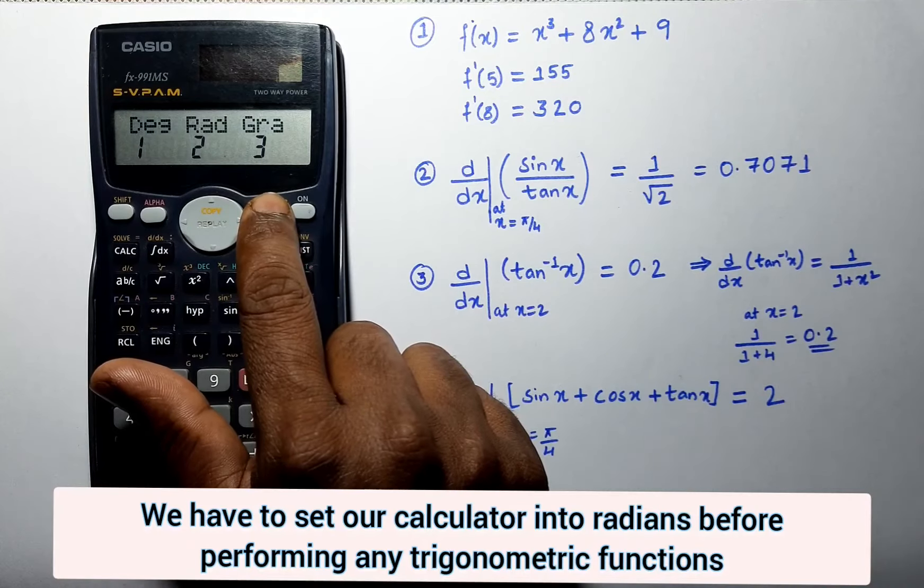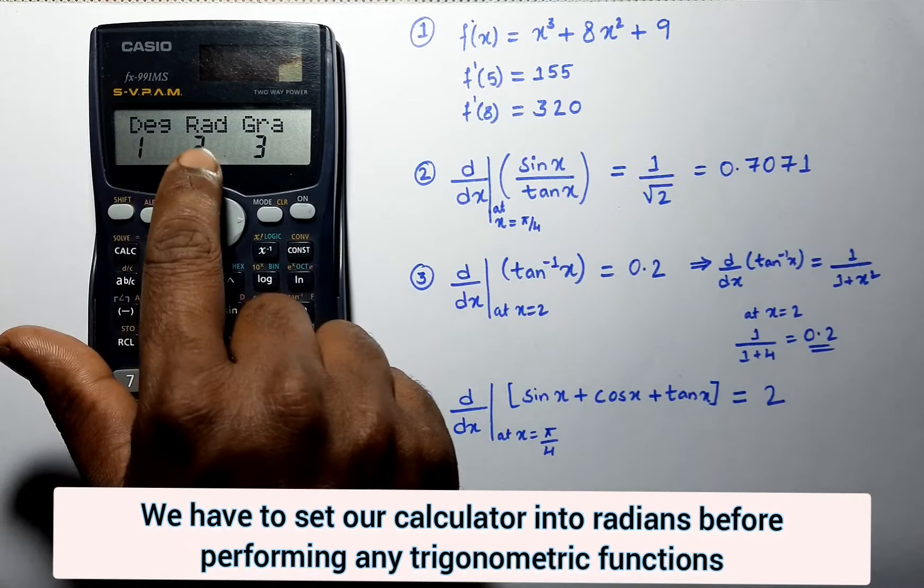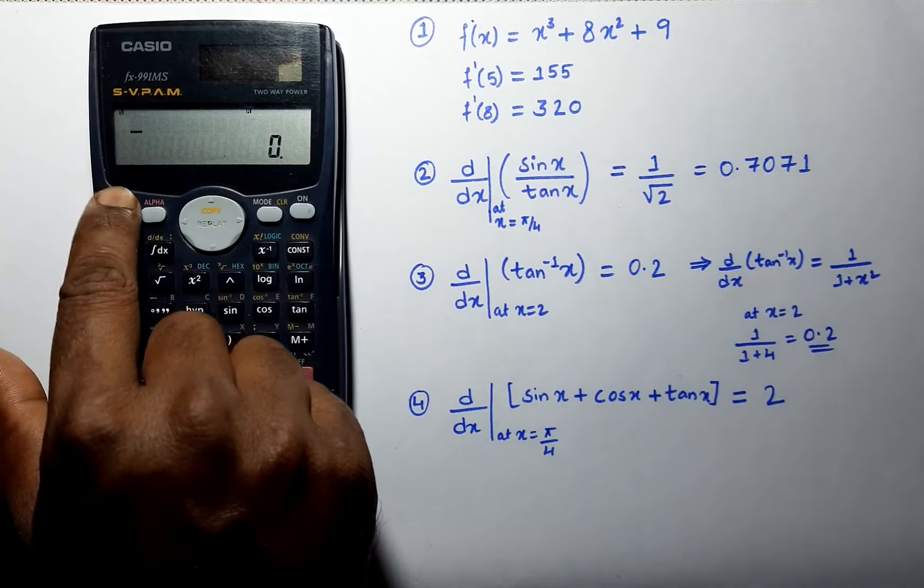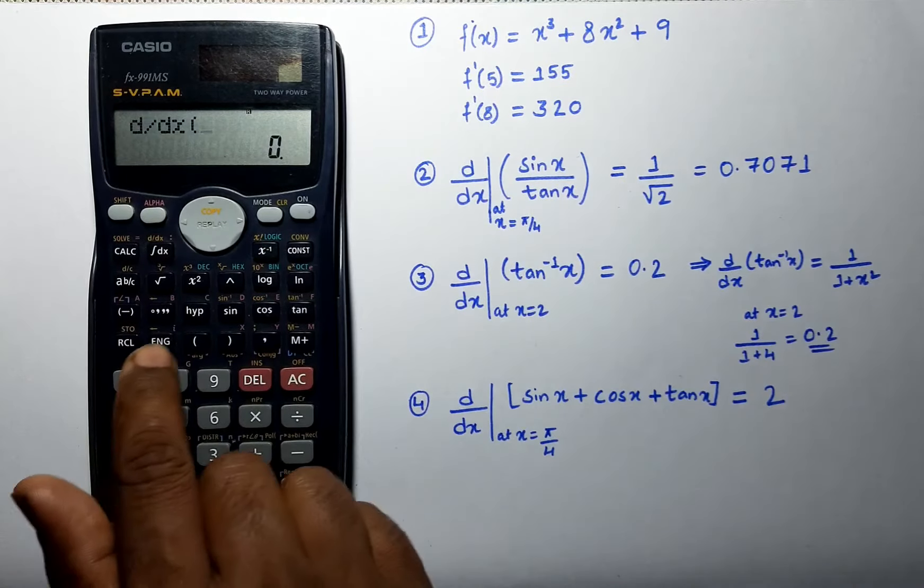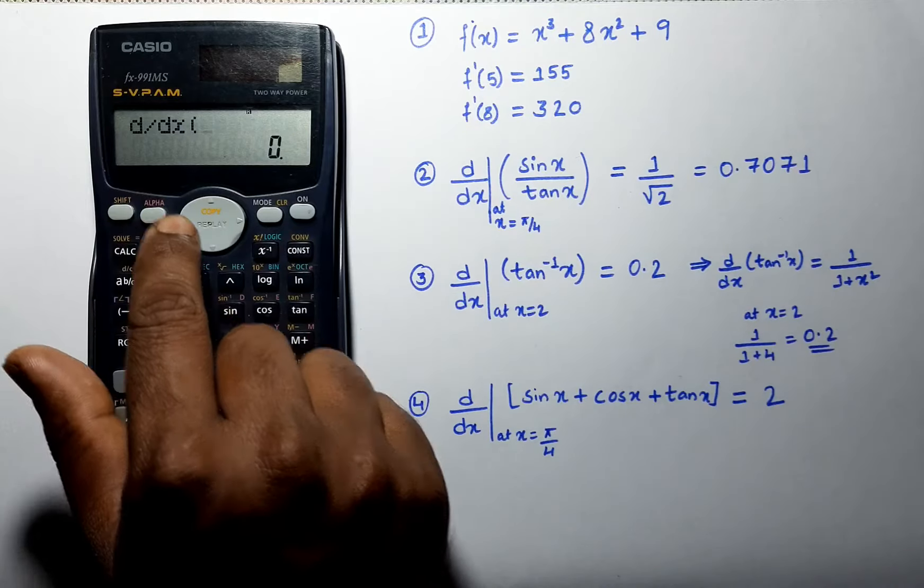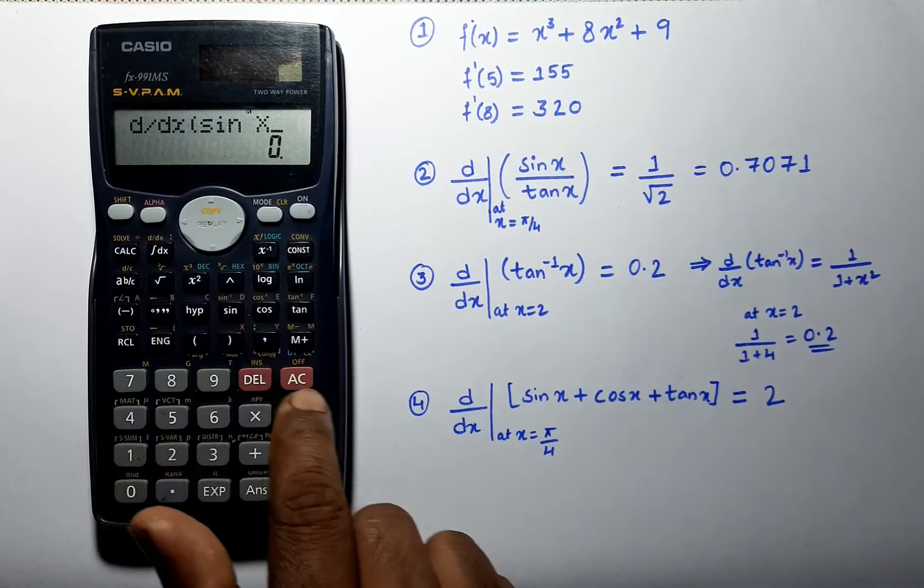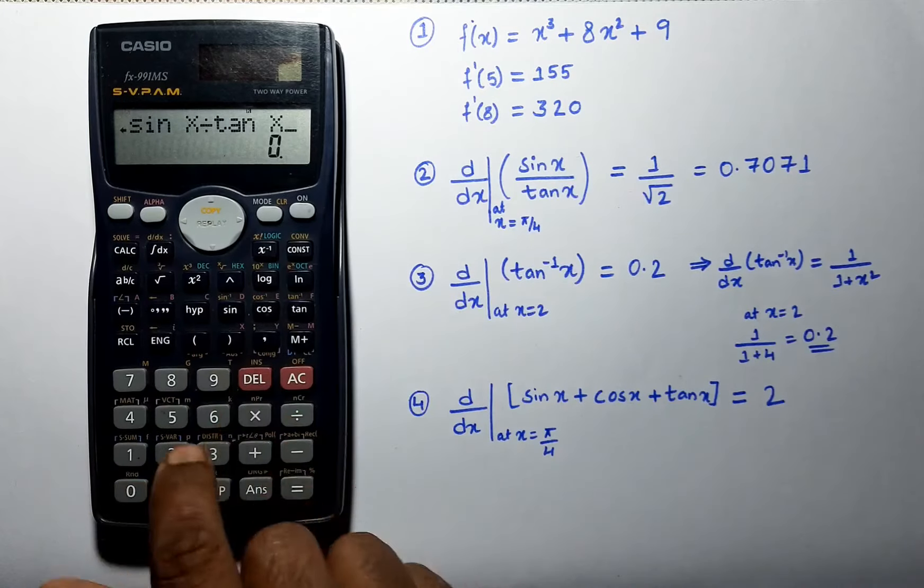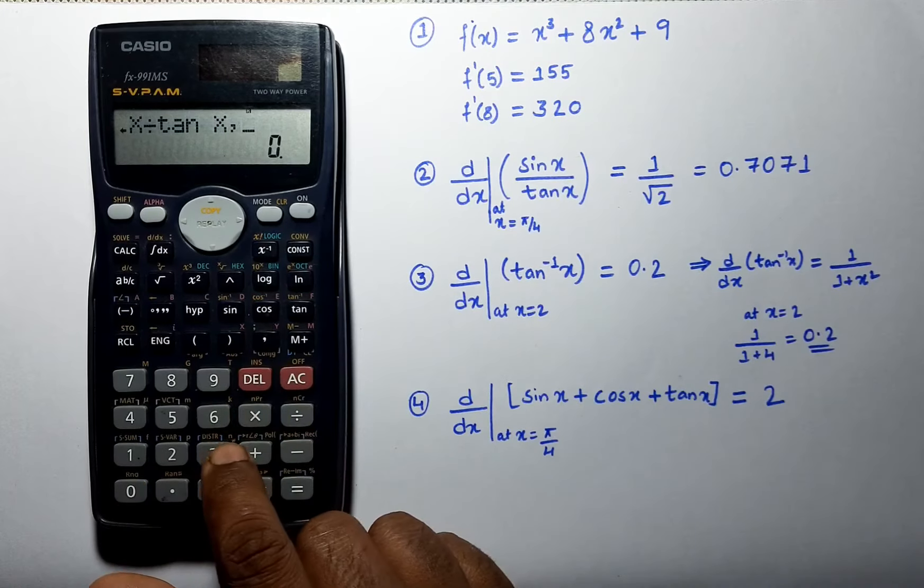Let's set our calculator into radian mode before solving any trigonometric functions. Differentiation of sin x divided by tan x at a point pi by 4.